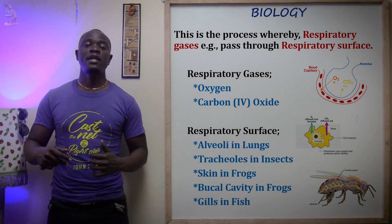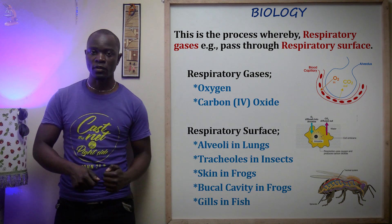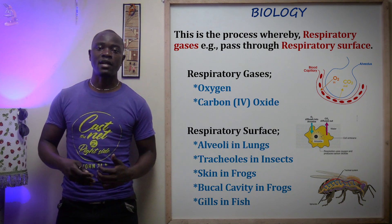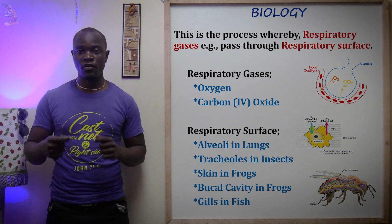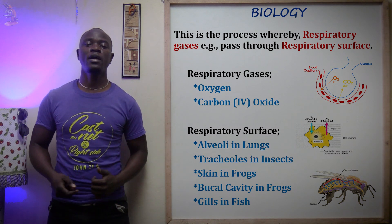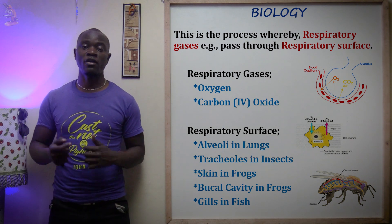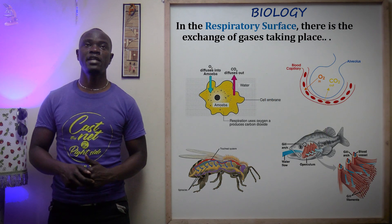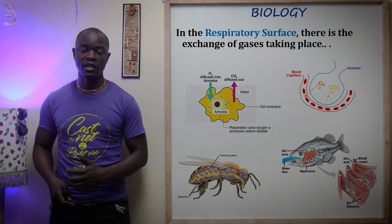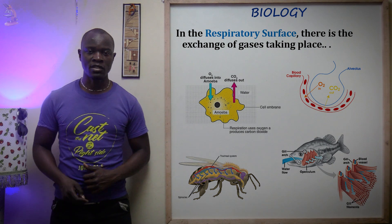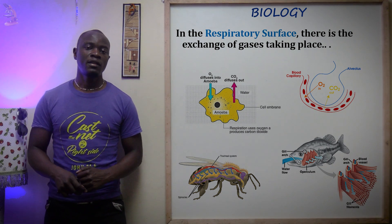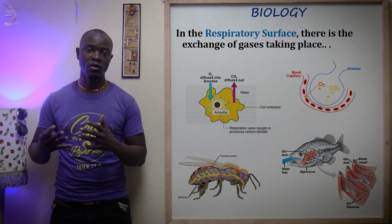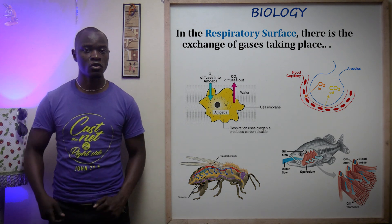Therefore, to get this correct, you must say that gas exchange is the process through which respiratory gases — that is oxygen and carbon dioxide — pass through the respiratory surface. For human beings we have alveoli found in the lungs; we have the buccal cavity of the frogs; we have the skin in frogs; we have the tracheal system in insects, etc. The respiratory surface is the region in the organism where this exchange takes place, whereby oxygen goes to one side and carbon dioxide goes to the other side.